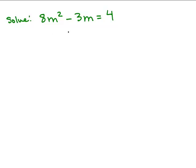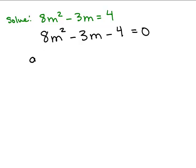We're going to solve this quadratic equation using the quadratic formula. The first thing we need to do is set the equation equal to 0, so we subtract 4 from both sides to have 8m squared minus 3m minus 4 equal to 0. Now we need to identify our variables a, b, and c, which are the coefficients. So we have a = 8, b = negative 3, and c = negative 4.